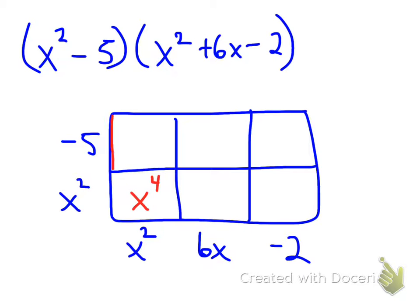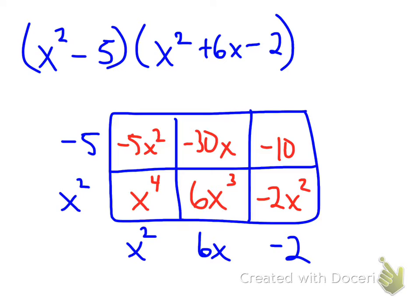Now, above that, I'm going to have negative 5 times x squared for negative 5x squared. This box is going to be x squared times 6x for 6x cubed. Above that, I have negative 5 times 6x for negative 30x. To the bottom right, I have x squared times negative 2 for negative 2x squared. And above that, negative 5 times negative 2 will be positive 10.